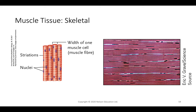Muscle tissue has three types: smooth muscle, skeletal muscle, and cardiac muscle. Skeletal muscle is easily identified by its striations — nice lines running across. Skeletal muscle is multinucleated, requiring lots of nuclei and mitochondria to supply the energy and directional information needed for function.